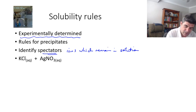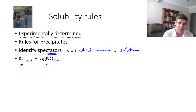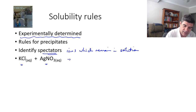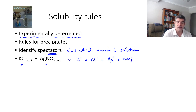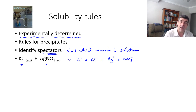So if we have a combination of solutions such as potassium chloride and silver nitrate, the first thing we need to do is say that potassium chloride is going to dissociate into potassium ions and chloride ions, and silver nitrate is going to dissociate into silver ions and nitrate ions. Then we need to apply some rules to determine what happens next.